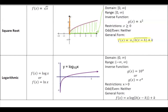The next function is the logarithmic function. The domain is 0 to positive infinity, and 0 is not included — be careful about the domain of the logarithmic function. The range is negative infinity to positive infinity. The inverse function is the exponential function: if it's the standard log, we get 10 to the x; if it's the ln function, we get e to the x. The general form is a log of b(x minus h) plus k.